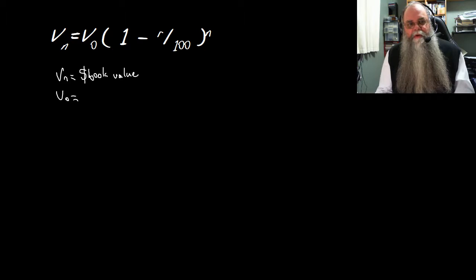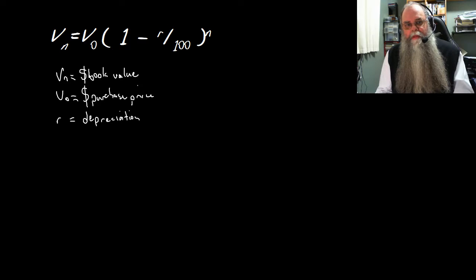V0 is the purchase price in dollars, R equals the depreciation rate as a percentage, and N equals the age or time in years.